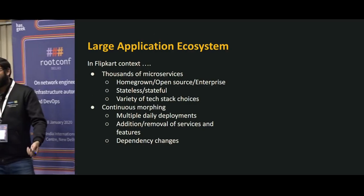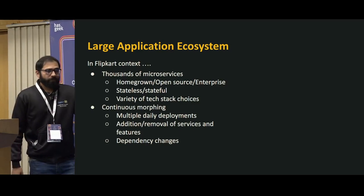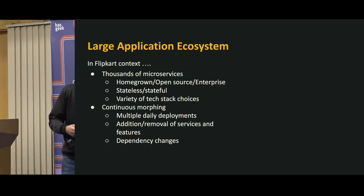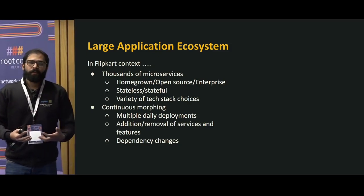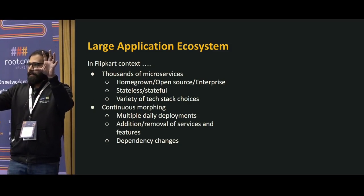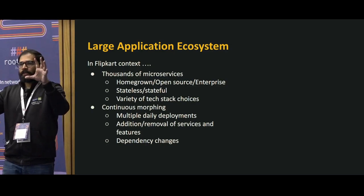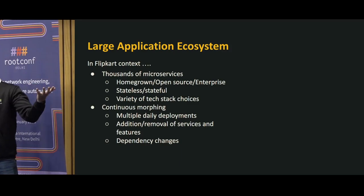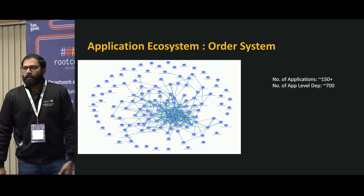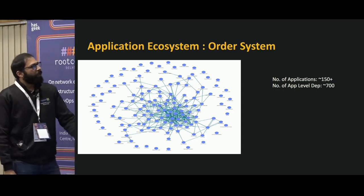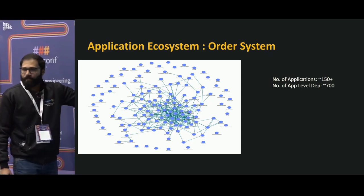There are thousands of microservices — stateful and stateless — and it's continuously morphing in terms of interactions. One feature might be shut down, a new feature developed, and new edges appear in your system as services start communicating to cater to that feature. This is how our order system looks right now — a very application-level view, just the order system microservices interacting with each other, not including interactions outside the order system.